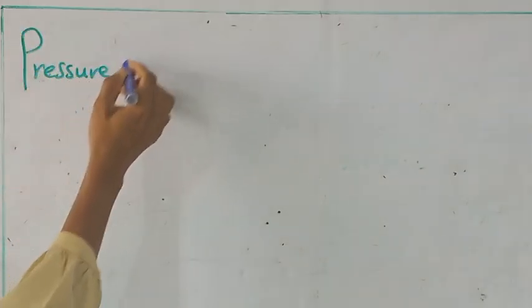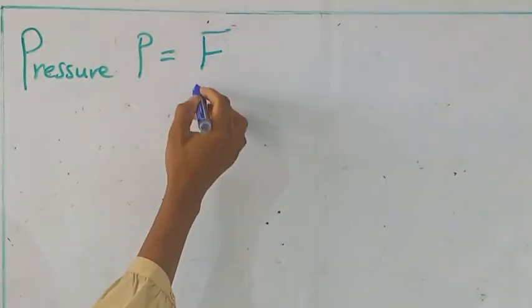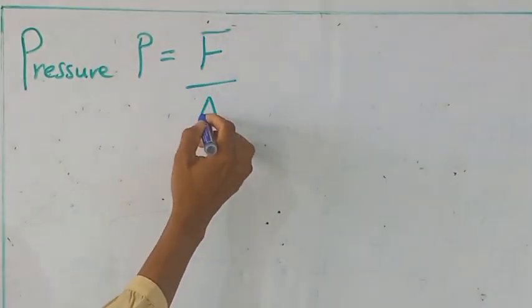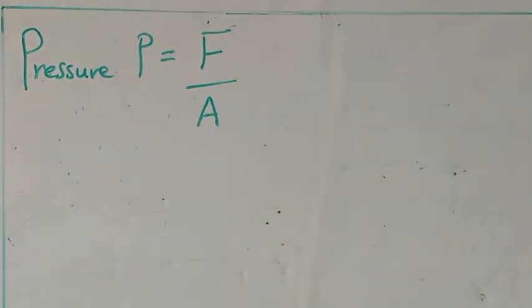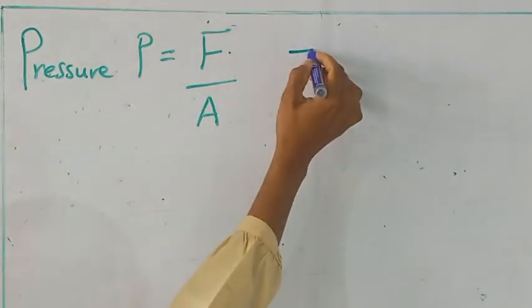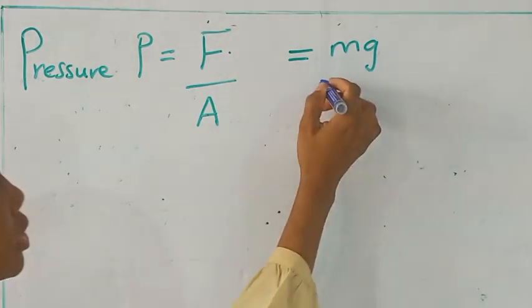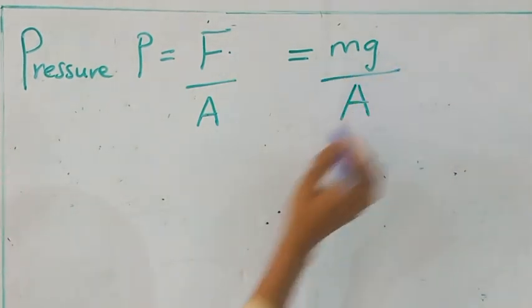Pressure is defined as force acting perpendicularly per unit area. And remember that force is equal to mg, mass times acceleration, all over the area.